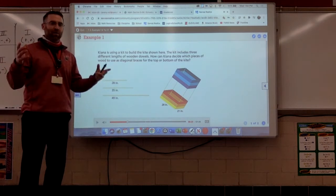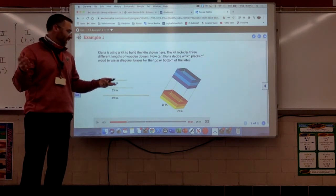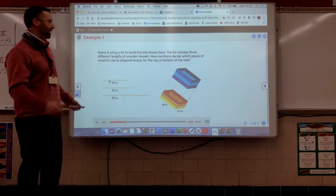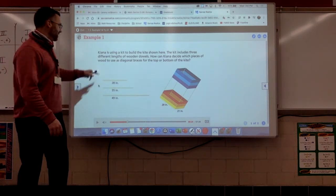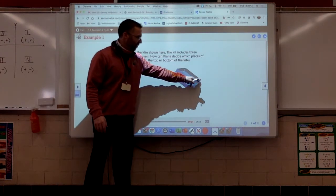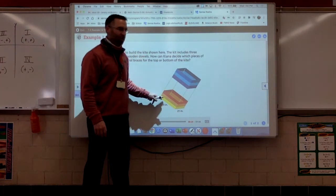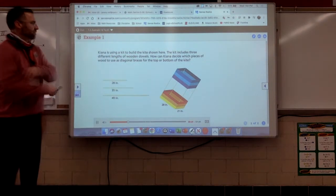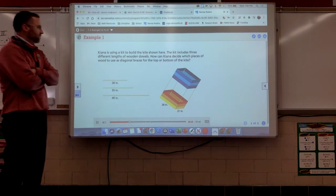Now, a wooden dowel is just basically a wooden stick, and she has different lengths of this wooden stick. She's got to brace this thing diagonally, and diagonal just means from one corner to its opposite corner. And decide which pieces of wood to use as diagonal braces for the top or bottom of the kite.